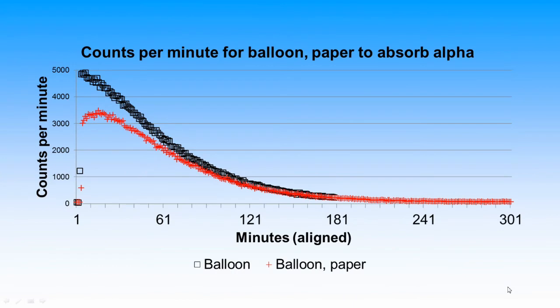This figure shows the data from a pair of balloon experiments. The black dataset corresponds to a test with only the balloon. No paper absorber was introduced. The red dataset corresponds to a test with the paper absorber inserted for the full collection time.